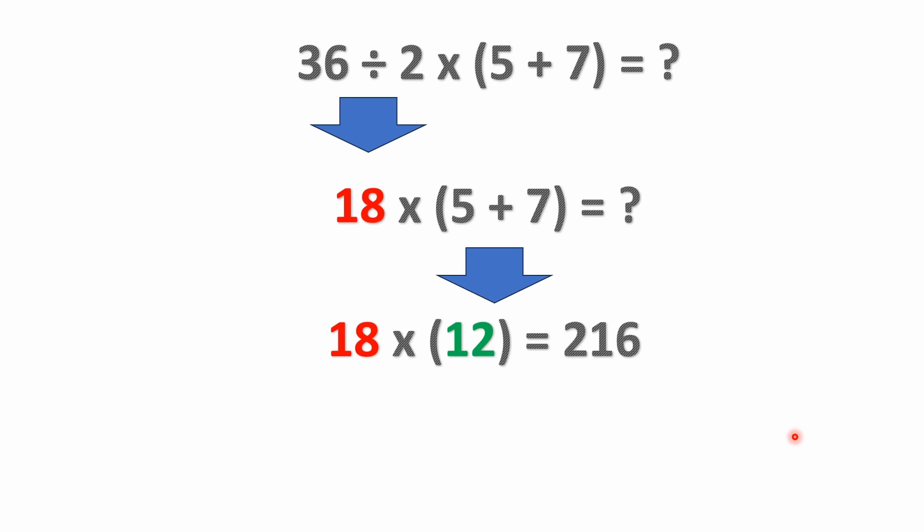First of all, we've got to remember the order of operations convention. Multiplication and division have precedence over addition, and multiplication and division have equal precedence, so you solve left to right in the order you encounter them. In this case we've got division to the left, so we solve that first. 36 divided by 2 is 18.